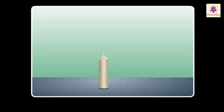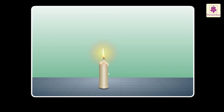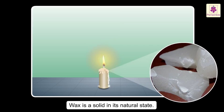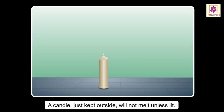Now let us see what happens when you light a candle. The wax near the flame starts melting and begins to flow down. A candle is made of wax, and wax is a solid in its natural state. A candle just kept outside will not melt unless lit.